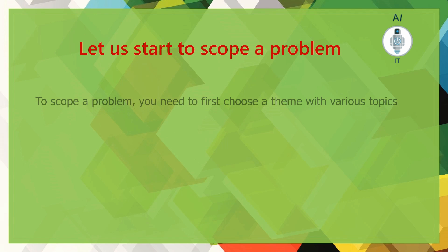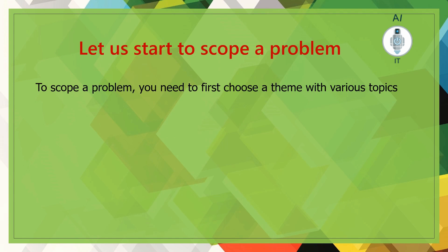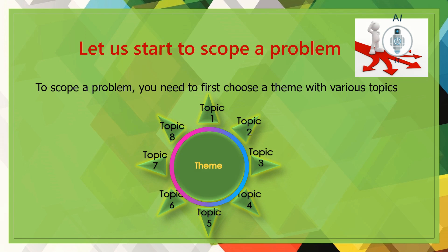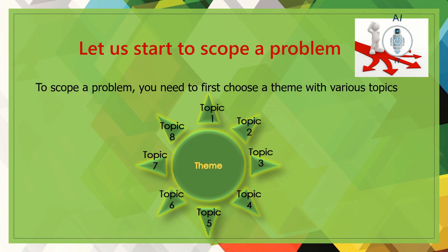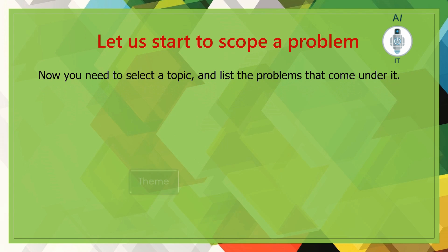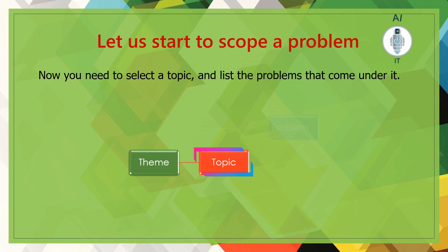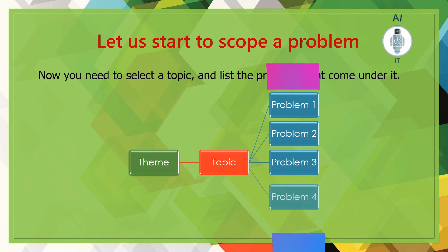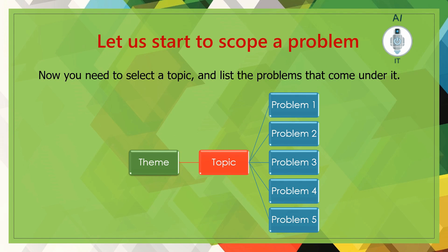Let us understand how to scope a problem. The first step is to select a theme that we are interested in. The next step is to select various topics related to that theme. Once this is done, we can choose our topic and list the problems that come under it. So we select a theme, then a set of topics, list down a set of problems, and then choose one of those problems.